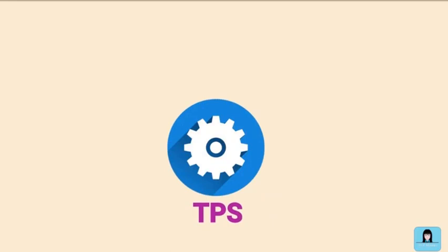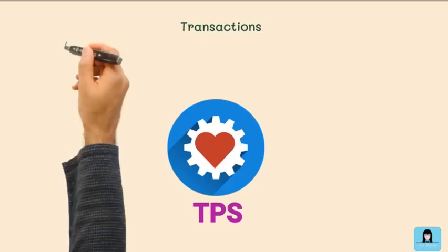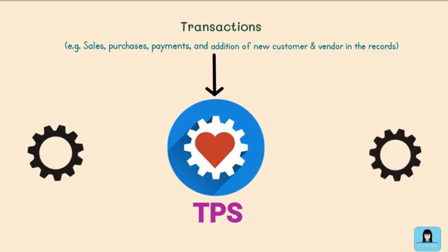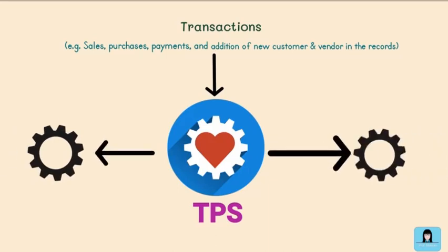is one of the subsystems of AIS. It is considered the heart of AIS because all transactions, such as sales, purchases, payments, and addition of new customers and vendors in the accounting records, undergo this subsystem before flowing to other subsystems, namely General Ledger System and Financial Reporting System,